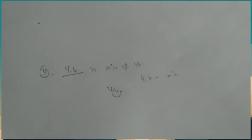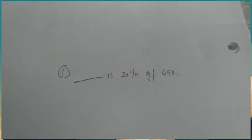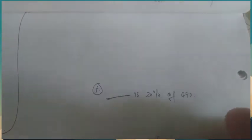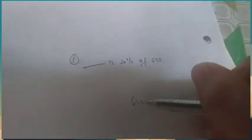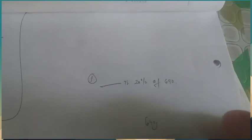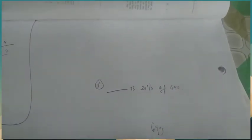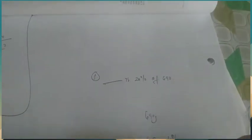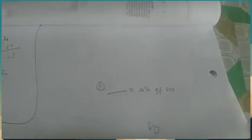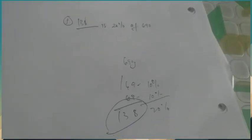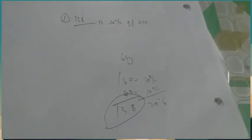Number 5: blank is 20% of 690. If we move the decimal point to get 10%, 690 becomes 69. For 20%, we multiply by 2: 69 times 2 equals 138. So 138 is 20% of 690.